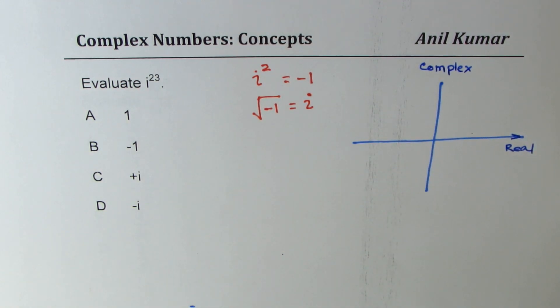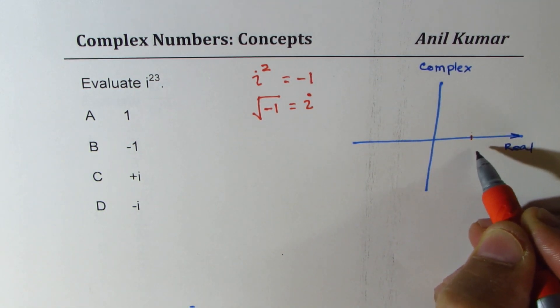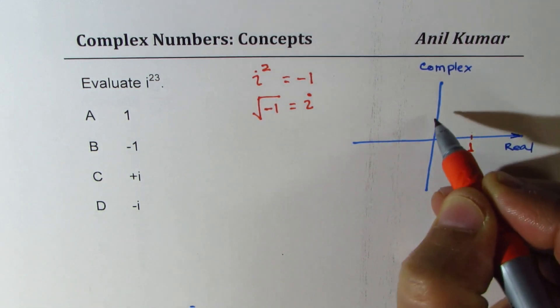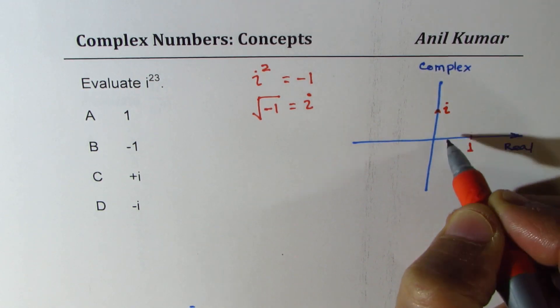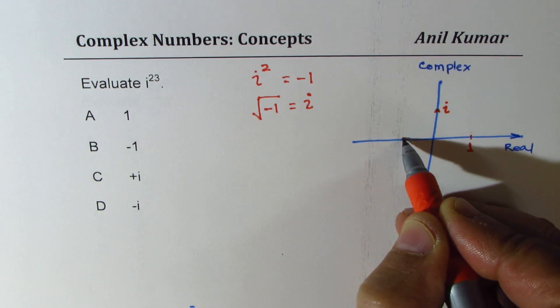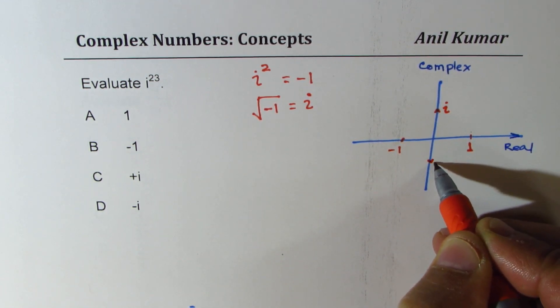So when we talk about i, we could represent real number 1 on this side, i vertically upwards, so this becomes negative 1, and here we have negative i.